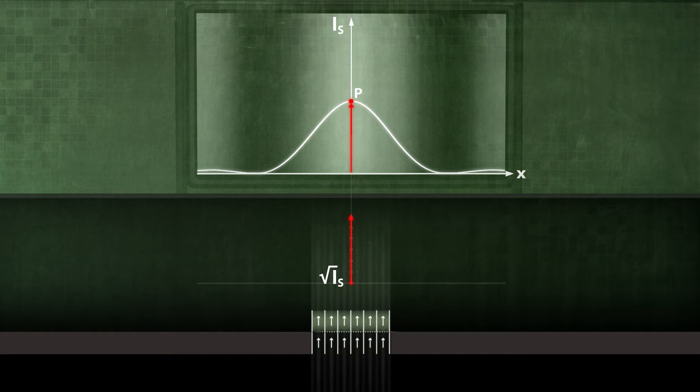Next, we consider the first minimum. What path difference delta do the six partial waves take on at this location? After adding the six vectors, we see that the vector sum is zero.